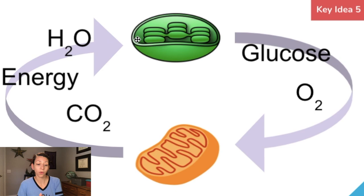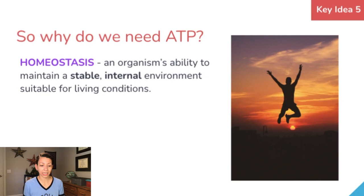Why do we need to produce this ATP anyway? It all comes down to homeostasis — our organism's ability to maintain a stable internal environment suitable for us to survive. The energy from ATP is used by organisms to obtain materials, transform materials, transport materials, and eliminate waste from the cell.